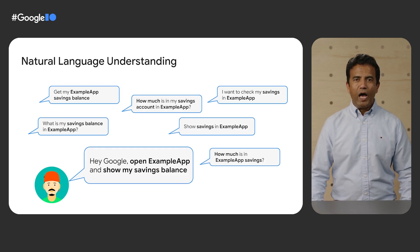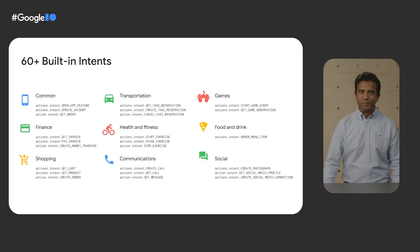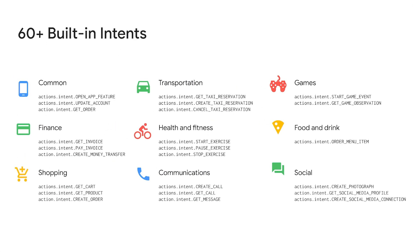There are many variations on how people might express the same intent using conversational language. Assistant uses natural language understanding technology to identify different speech patterns that correspond to the same particular functionality. We've already modeled speech patterns for more than 60 use cases, which we call built-in intents, or BIIs. These include use cases that apply broadly to most apps, like opening a feature or updating an account, and use cases primarily applicable to apps in a specific category, like ordering a menu item for food and drink apps.